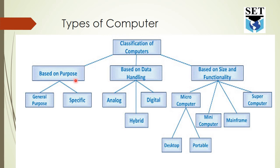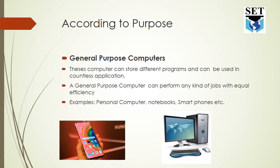First, we will focus on classification based on purpose. Computers can be classified according to purpose into general purpose computers and special purpose computers. General purpose computers can store different programs and can be used in countless applications. A general purpose computer can perform any kind of job with equal efficiency.